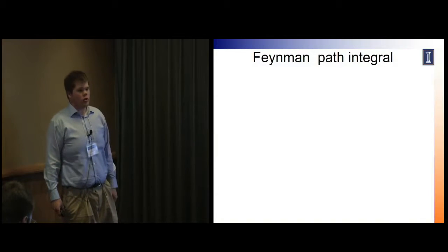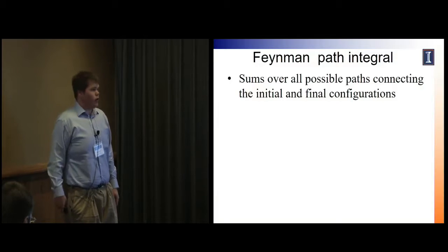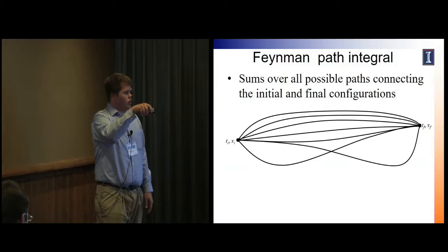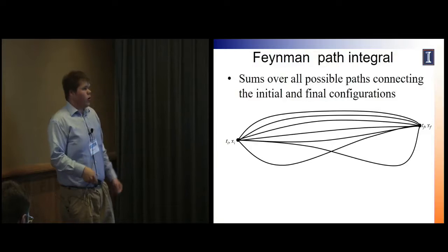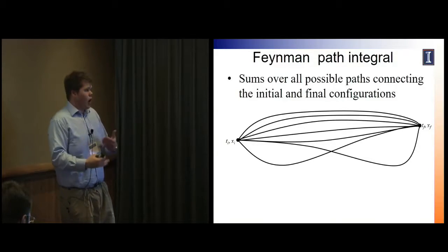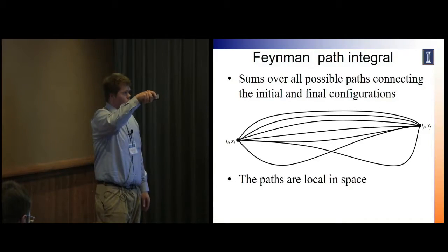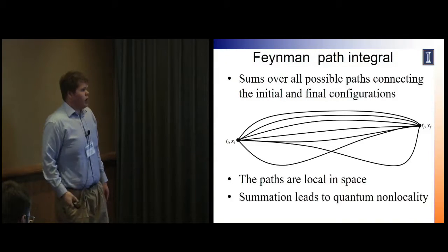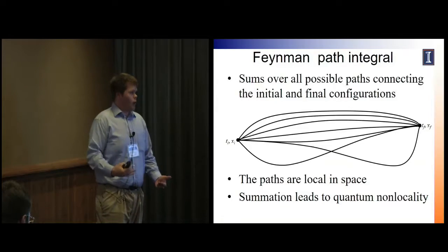You can't straightforwardly use wave functions because the non-locality of wave functions doesn't work well with classical mechanics — if you have a really delocalized system, you don't know what forces to give to the classical part. So we need something that is local in nature but capable of capturing quantum non-locality. The way we do that is with the Feynman path integral, which sums over all possible paths connecting the initial and final configuration. Each path is local in space, so you can easily couple it to classical mechanics, but because you're summing over many different paths, you can still capture quantum non-locality.